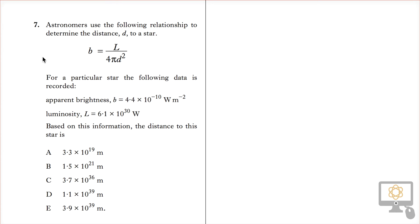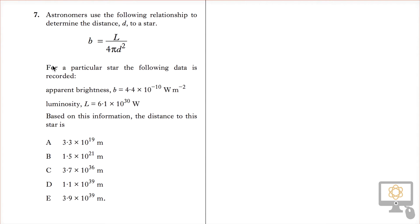We'll quickly look at question 7 from the Higher 2014 physics paper, the revised Higher. It says astronomers use the following relationship to determine the distance d to a star.